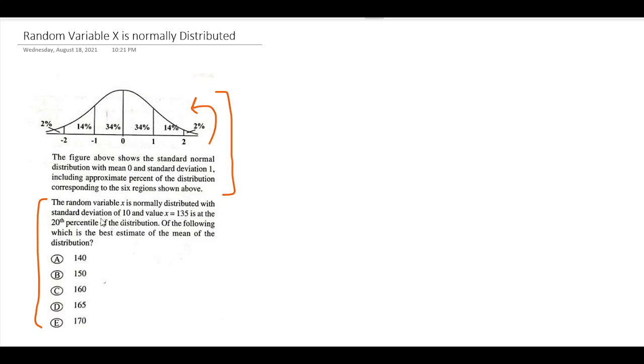Anyway, the random variable X is normally distributed with a standard deviation of 10, and a value of X = 135 is at the 20th percentile of the distribution. Of the following, which is the best estimate of the mean of the distribution? The question is interested in an estimate value, not an exact value.